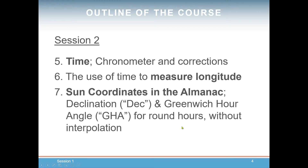We'll then do a video on time and the chronometer and its corrections, then one on the use of time to measure longitude. Then we'll cover the sun's coordinates in the almanac — both the declination and Greenwich hour angle for round hours without interpolation. Round hours is Dominique's phrase for what we might call whole numbered hours, like 8 o'clock, 9 o'clock, 10 o'clock.